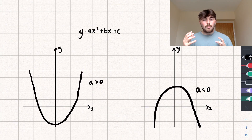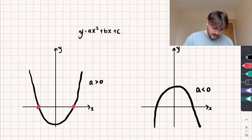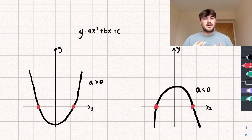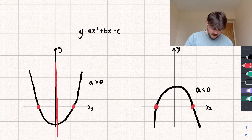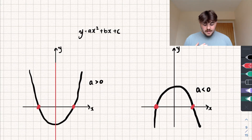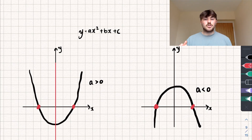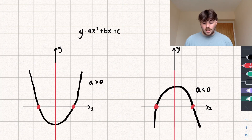The second thing is, we call the points where the graph intersects with the x-axis the roots of the equation — that's a term to be familiar with. It just so happens that quadratic graphs have a line of symmetry, and that line of symmetry happens to be directly in the middle of the two roots of the equation.